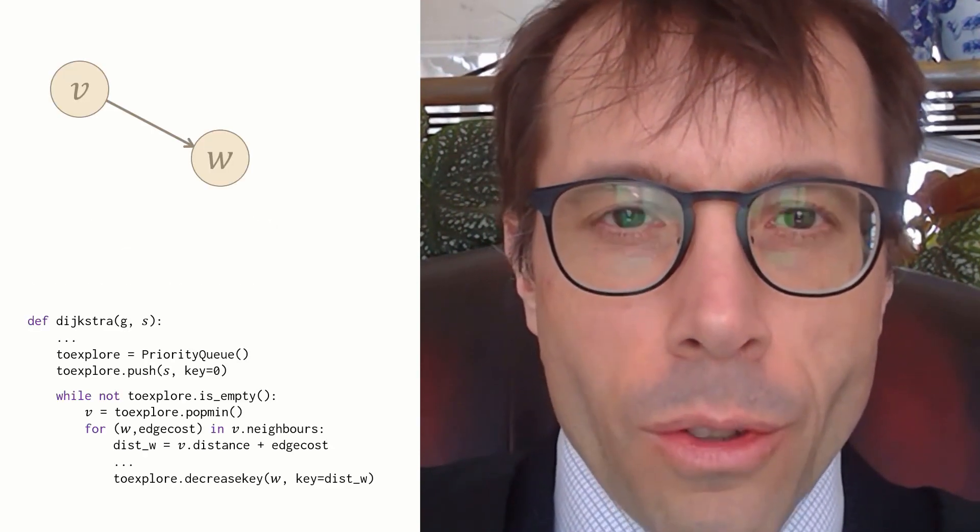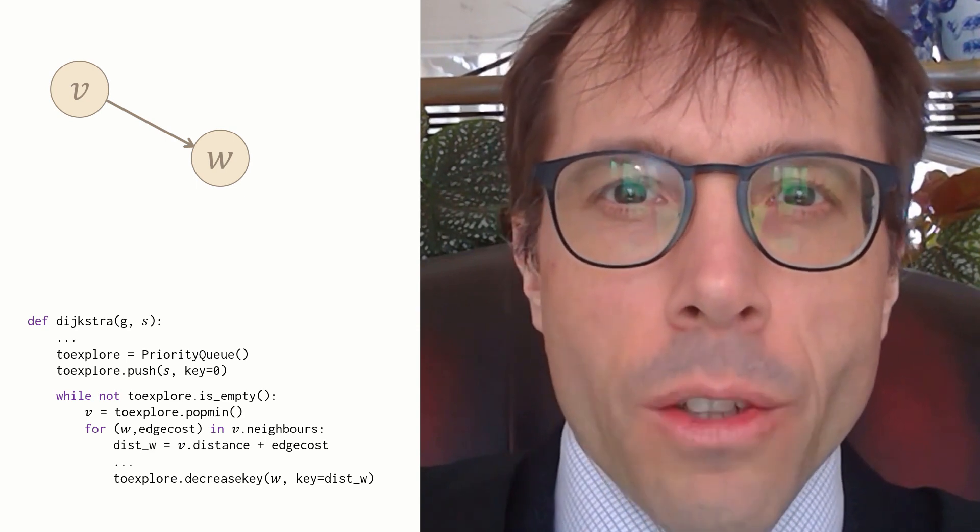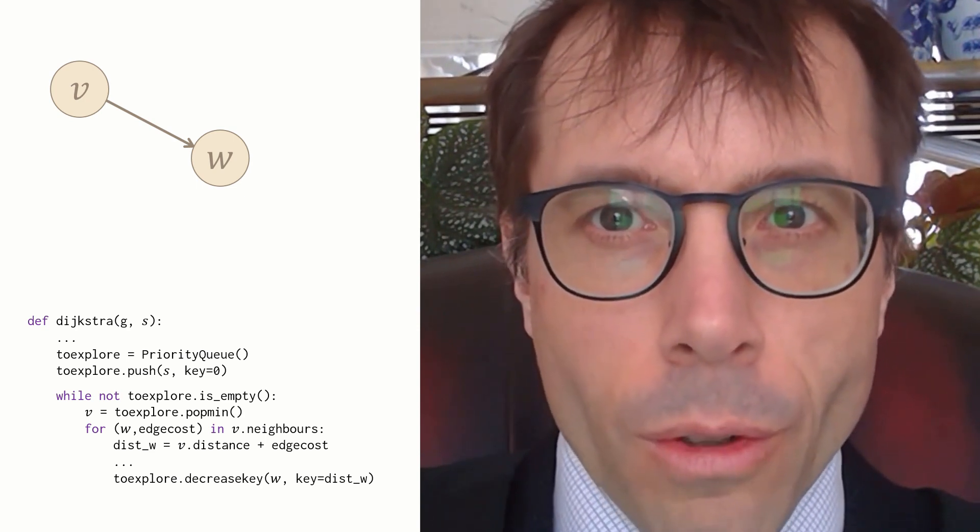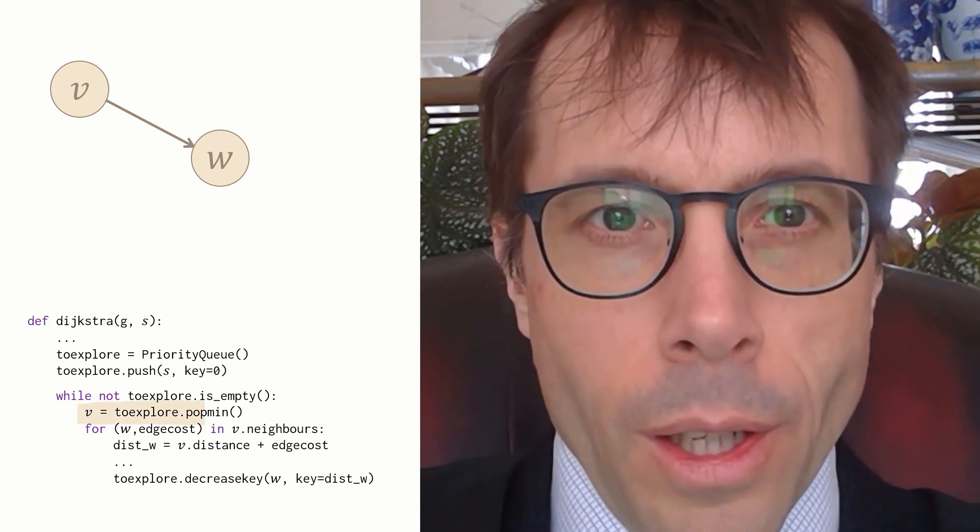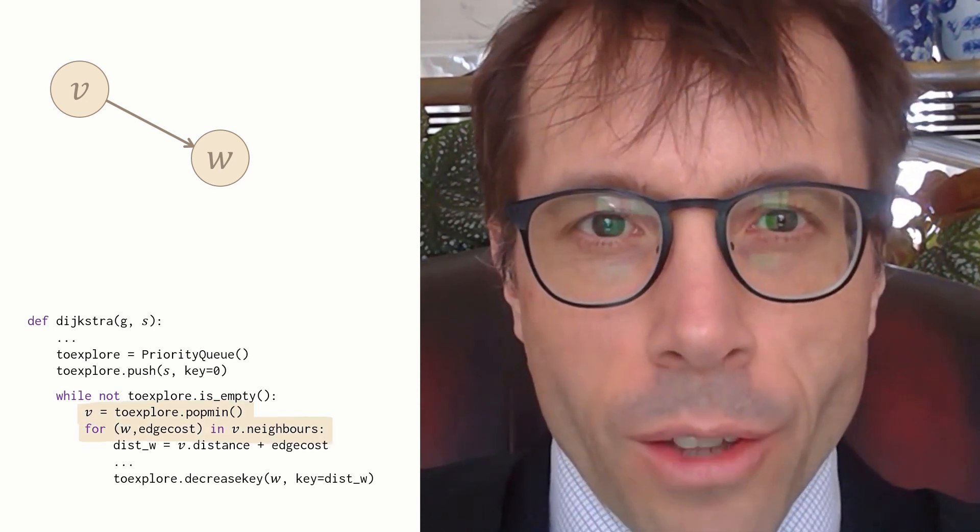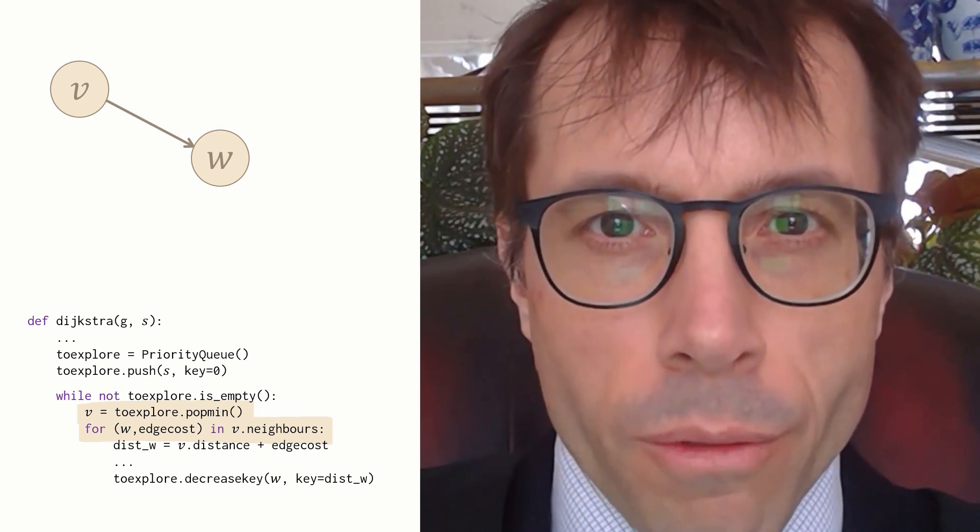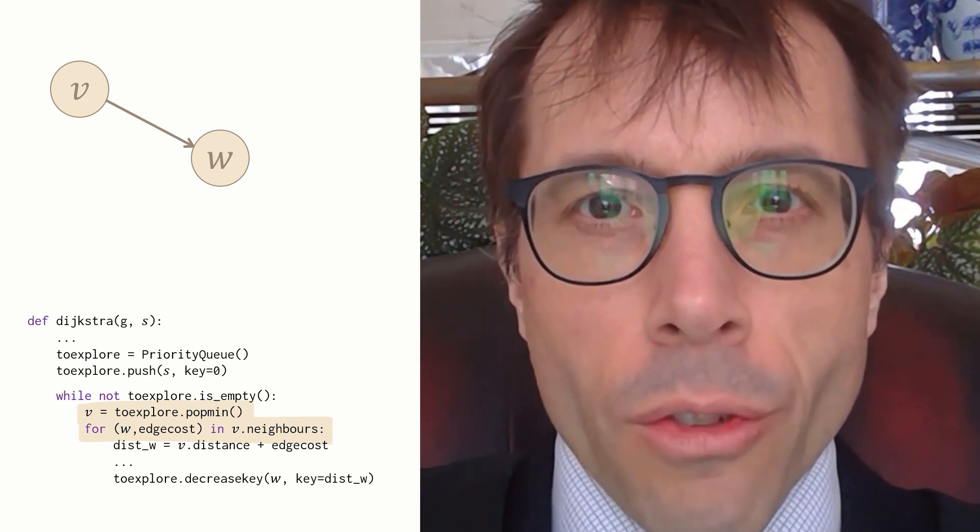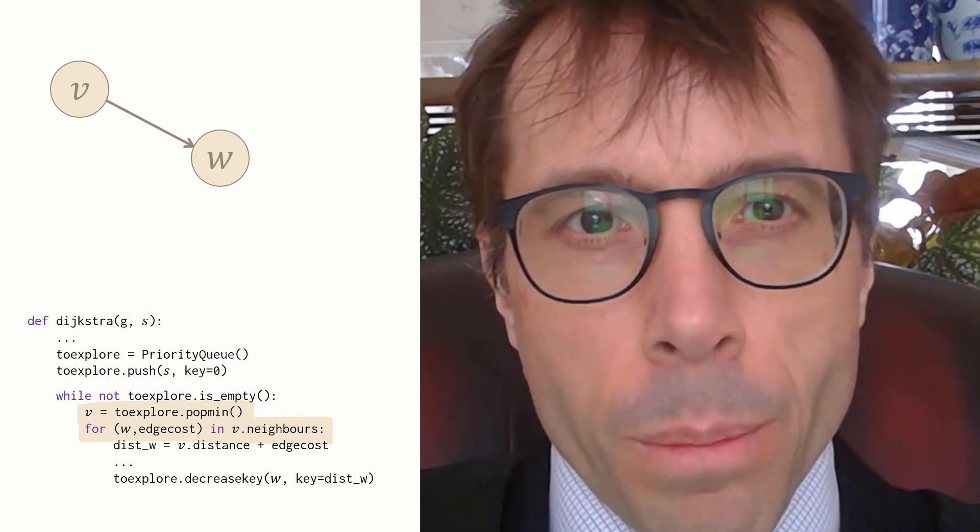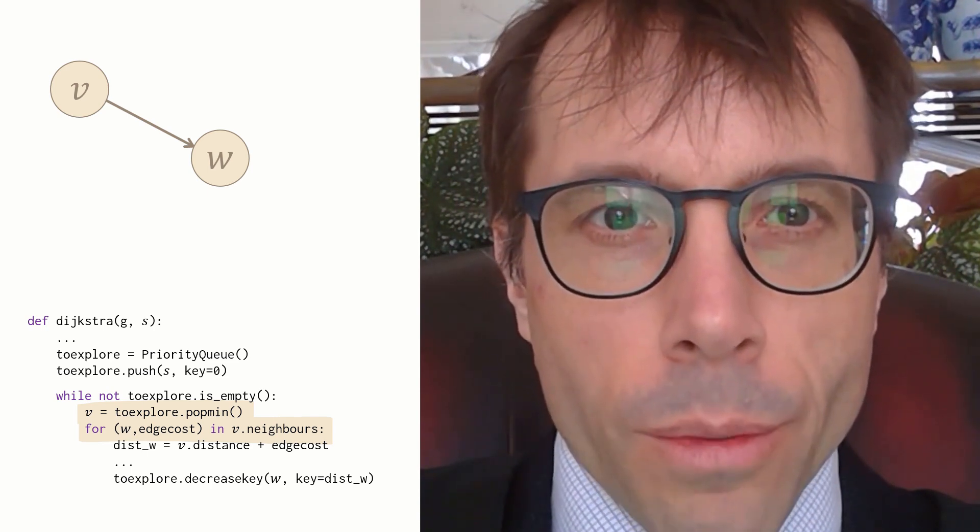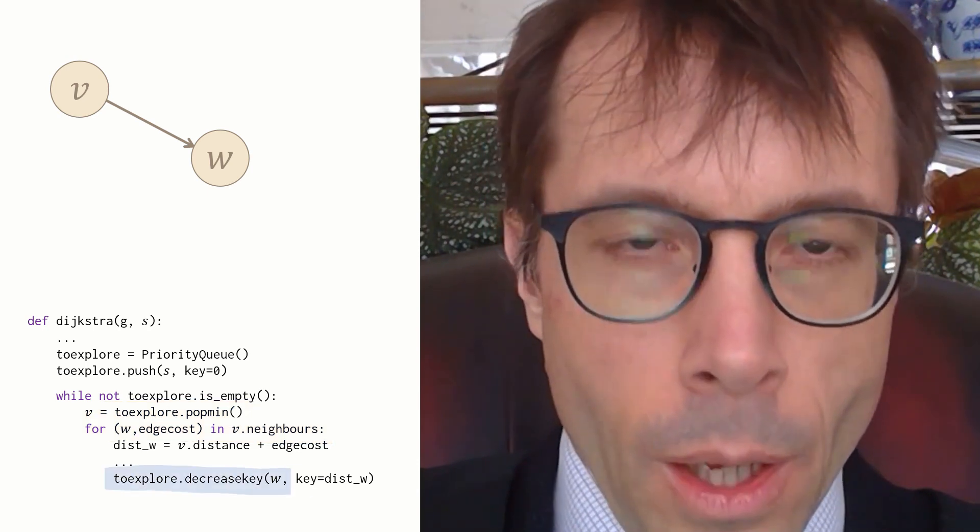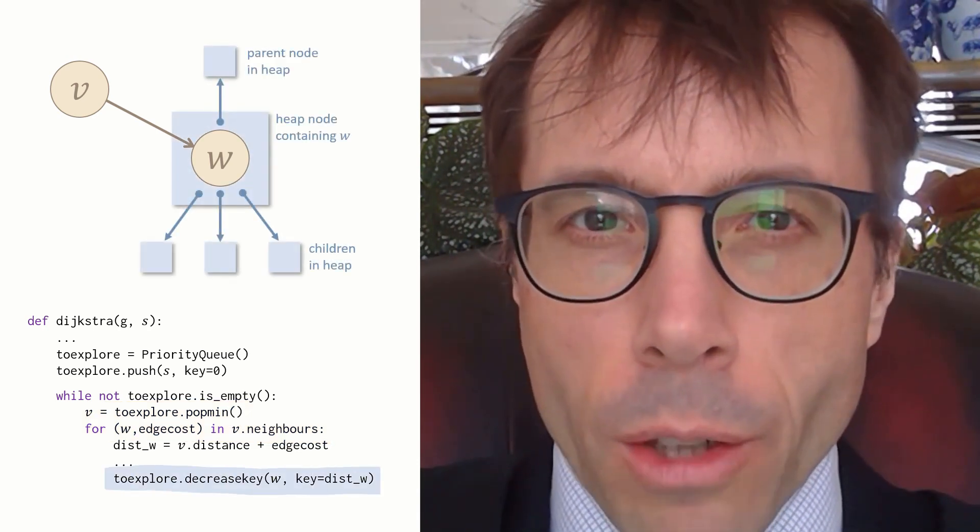This is what students are thinking of. They have in mind Dijkstra's algorithm, the algorithm for finding distances on a graph, and this is what the algorithm does. It calls POPMIN to get the next vertex to explore, let's call it V, and then it scans through these neighbours in the graph and potentially it finds a neighbour, call it W, whose key it wants to decrease. Let's think about this decrease key operation.